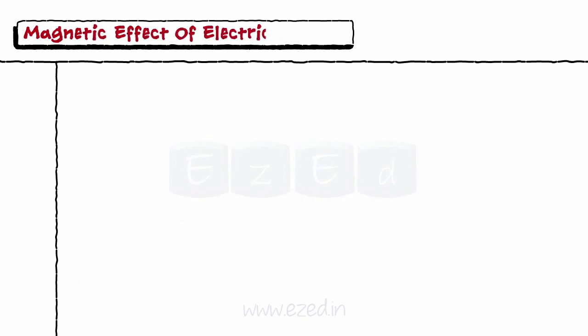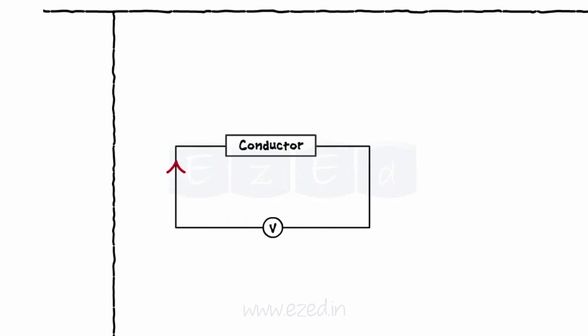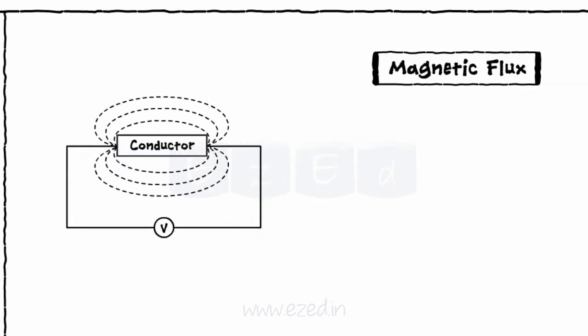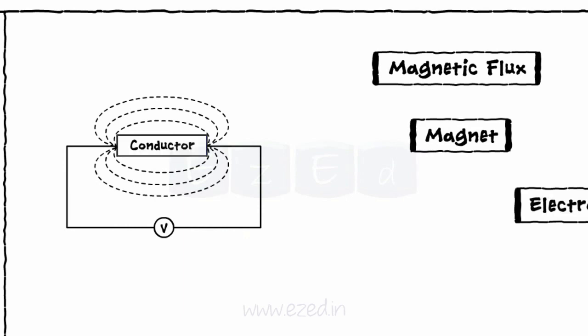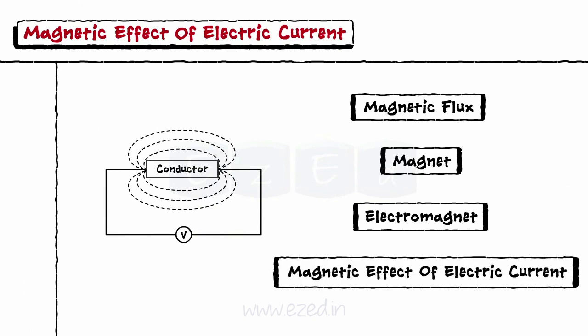Let's start with the magnetic effect of electric current. When a conductor or a coil carries the current, it produces the magnetic flux around it and starts behaving as a magnet. Such a current carrying coil is called an electromagnet and the phenomenon is called the magnetic effect of electric current.